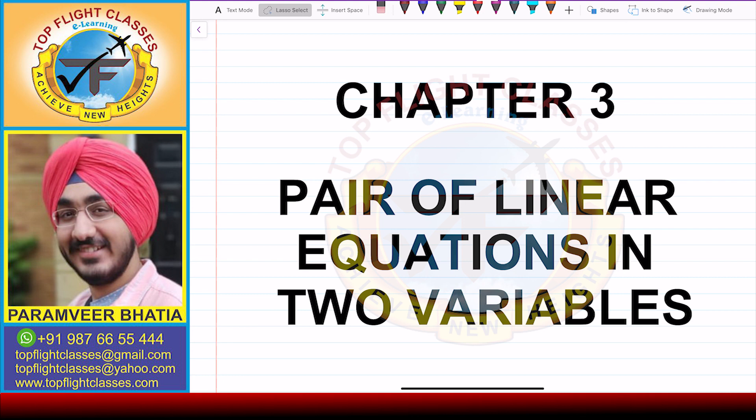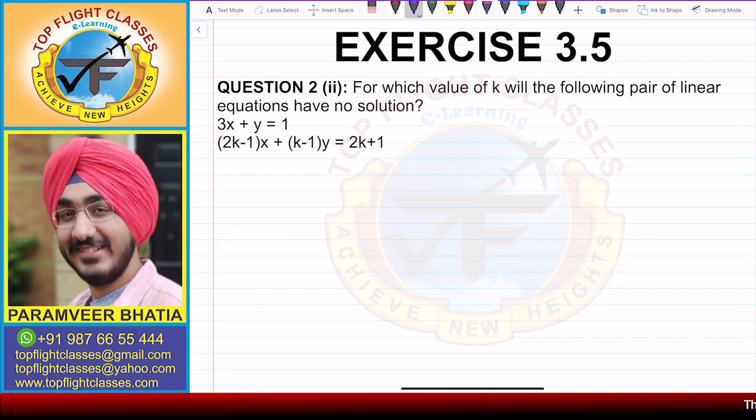Hey guys, welcome to my channel Top Flight Classes. In this video, we'll cover the second part of question number two of exercise 3.5. The second part says: for which value of k will the following pair of linear equations have no solution?